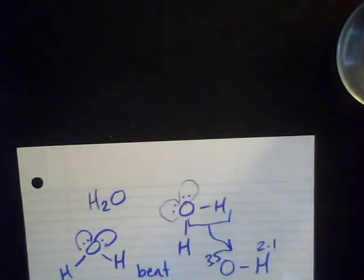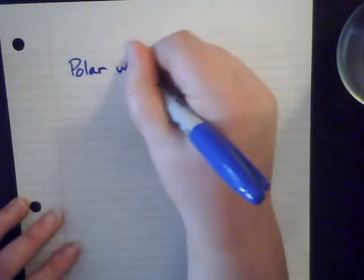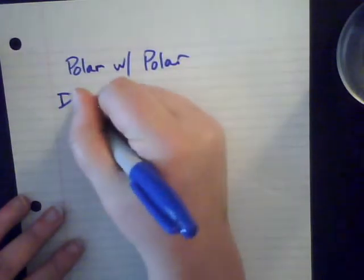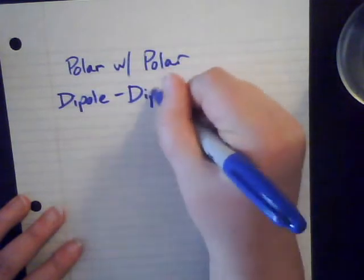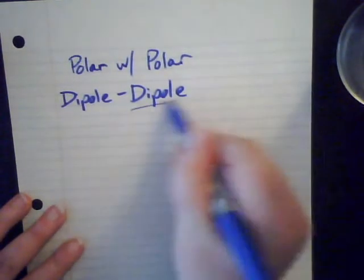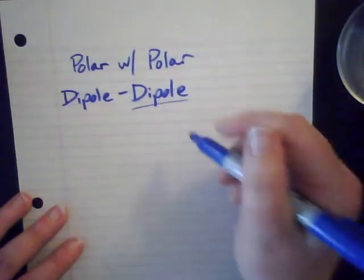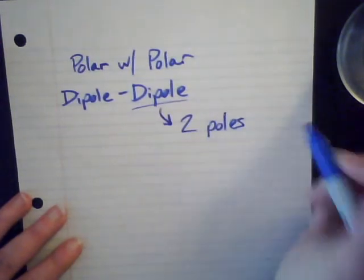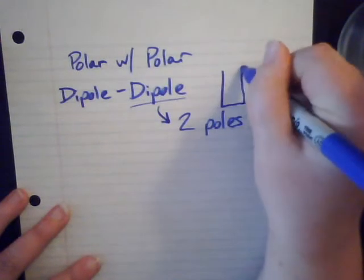All of this is a review of Lewis dot structures and VSEPR structures. When you put together molecules that are polar — polar with polar — then we have what is called a dipole-dipole attraction. The term dipole refers to 'di' meaning two poles, or two ends. We can think about poles in terms of a battery, which has a positive end and a negative end.